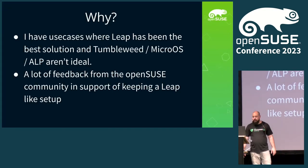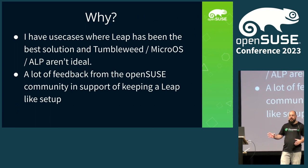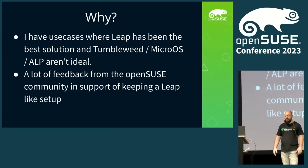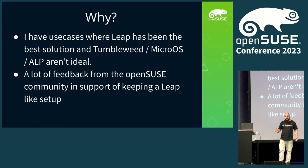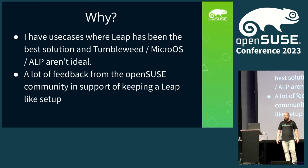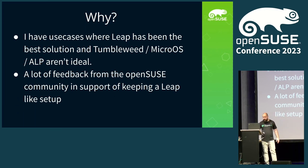A good place to start when creating a project is thinking about why you're doing it. Sometimes the why might just be for fun. In this case, I have a desktop system that doubles as a KVM server — rebooting it is annoying. I don't want to move to Tumbleweed or a transactional-based machine because of that, so Leap is better there. I also saw a lot of feedback from the openSUSE community saying they would like some form of Leap.